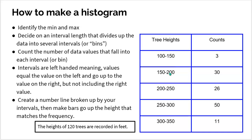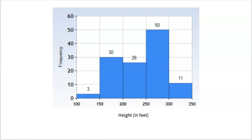Once you have your frequency table created and counted how many trees fall into each bin, you create a number line broken up by your intervals and make bars showing the height for the frequency in each bin. Here is a frequency table — similar to a categorical one where you might count red, green, or orange Skittles, but since it's quantitative, we break the data into intervals or bins. Then you make bars showing how high each bin is. On the left we have frequency — the counts in each bin.